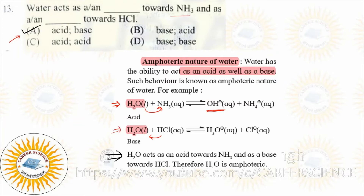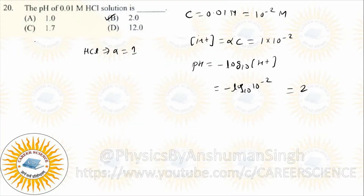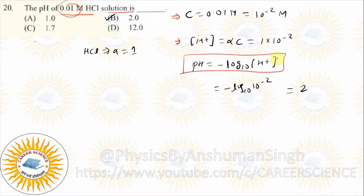The pH of a 0.01 molar HCl solution — here you have a concentration given. The formula always uses H+ ions and OH- ions. This concentration is alpha into C, but here C depends on your acid.